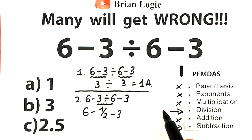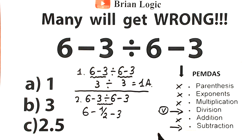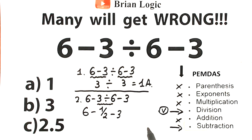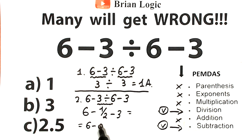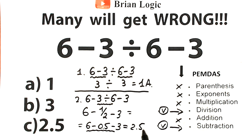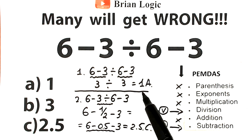After completing the division step, we move to the subtraction. We now have a basic subtraction: 6 minus 0.5 minus 3, which equals 2.5. That is the correct answer to this challenge — option C. But a lot of students go back to the wrong answer A.